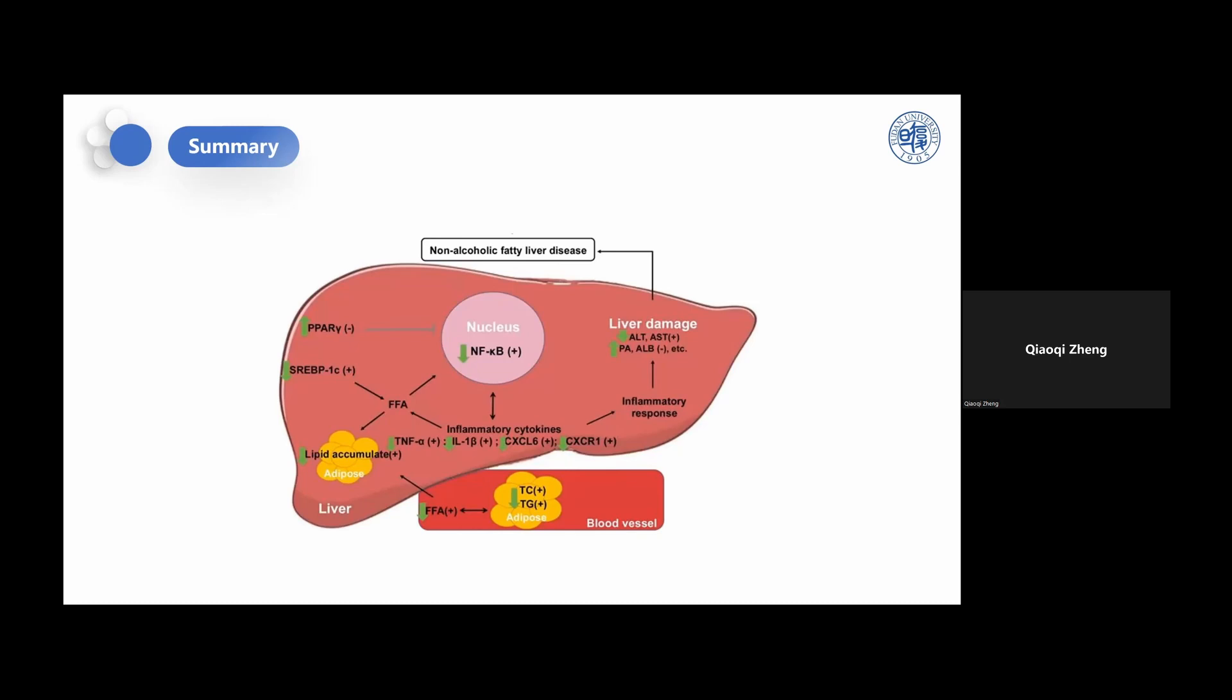Treatment with 919 syrup increased PPAR-γ activity and inhibited the activities of TNF-α, IL-1β, CX3CR1, and SREBP-1c, thereby down-regulating the NF-κB-related inflammatory signaling pathway. 919 syrup therefore appears to regulate the balance between anti-inflammatory pathways and pro-inflammatory pathways to produce its anti-inflammatory effects.